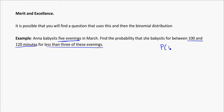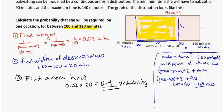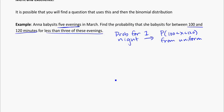Find the probability that she babysits between 100 and 120 minutes for less than three of these evenings. That's the probability that she's between 100 and 120 minutes, and this is out of the uniform, so from uniform. We calculated that in the last example and we found that our probability was going to be 0.4.